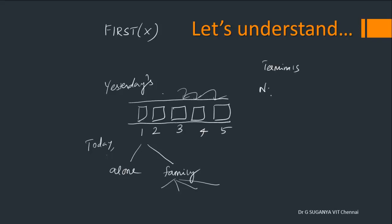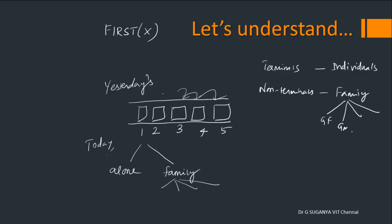Now I am mapping this concept to the components of context-free grammar. Terminals you assume to be the individuals visiting the doctor. Non-terminals represent a family. This family can again get expanded to any number of people — maybe the grandfather, grandmother, father, and son. But this family tree has to be given first to the booking, and the same applies to processes in our computer systems.